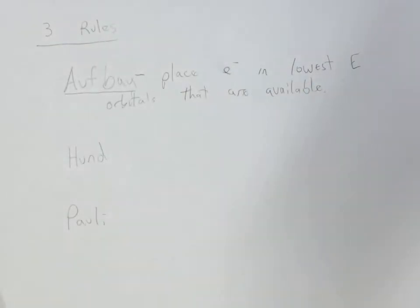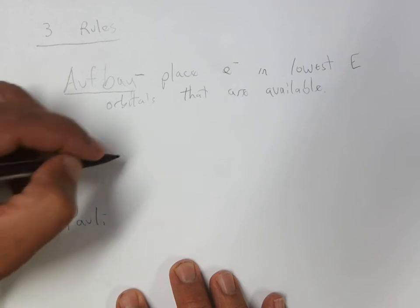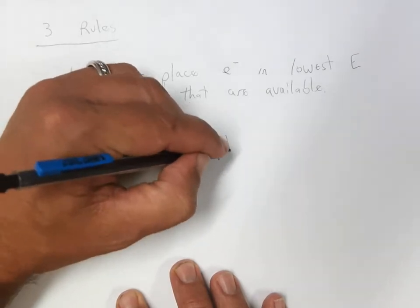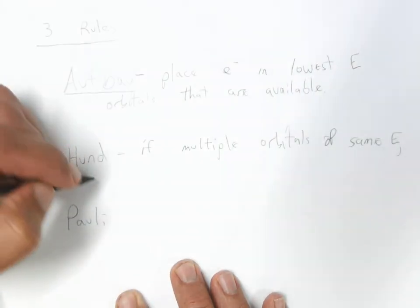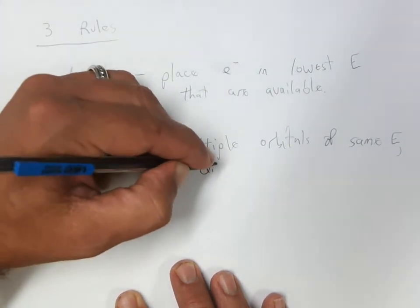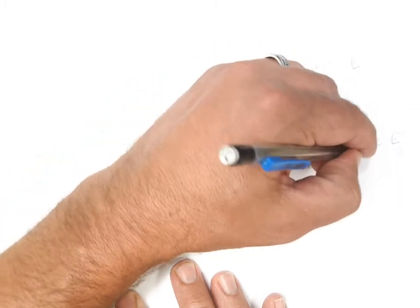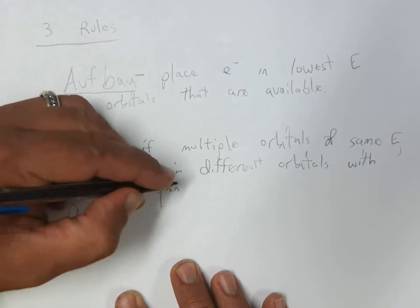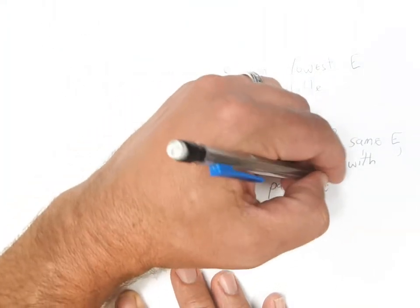When I was building up the carbon atom, I started with the 1s orbital, which is the lowest energy orbital that you can have, and I placed a maximum of 2 electrons in that orbital. So with Aufbau, you place electrons in the lowest energy orbitals available first. For Hund's Rule — in its long form, it's Hund's Rule of Maximum Multiplicity — if there are multiple orbitals of the same energy, you place electrons in different orbitals with the same spin, so the same direction of the arrow, before pairing electrons in the same orbital.